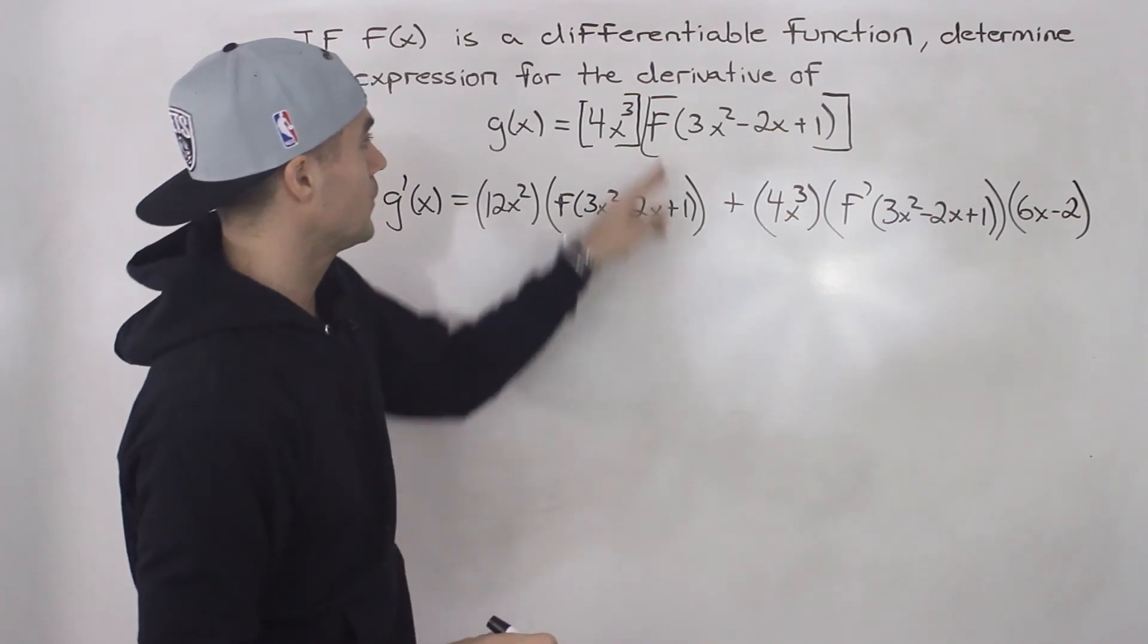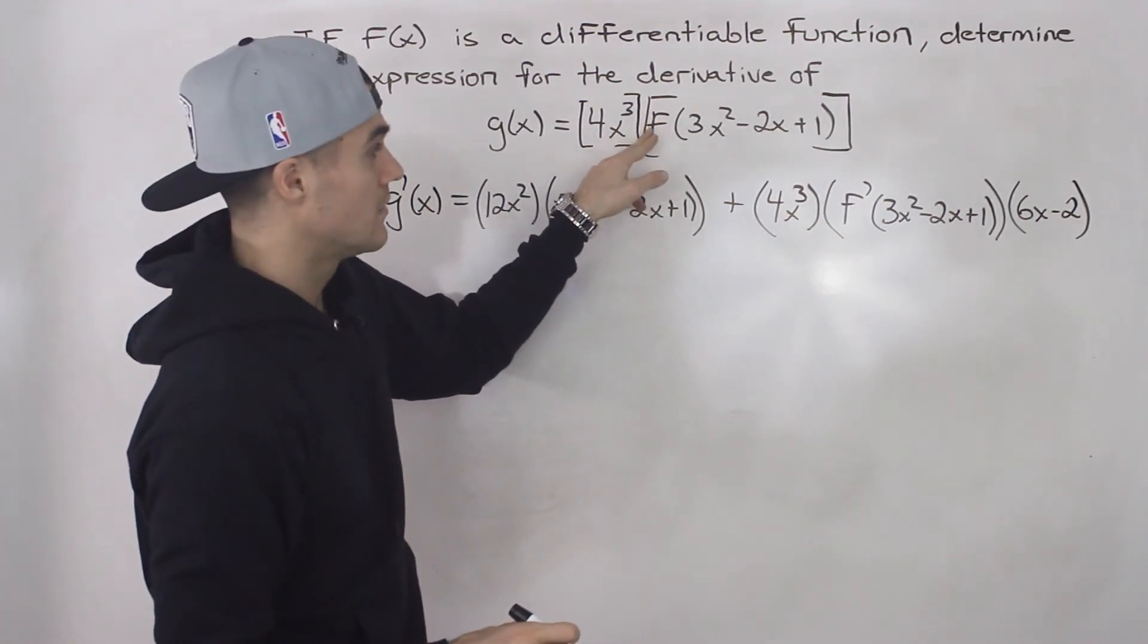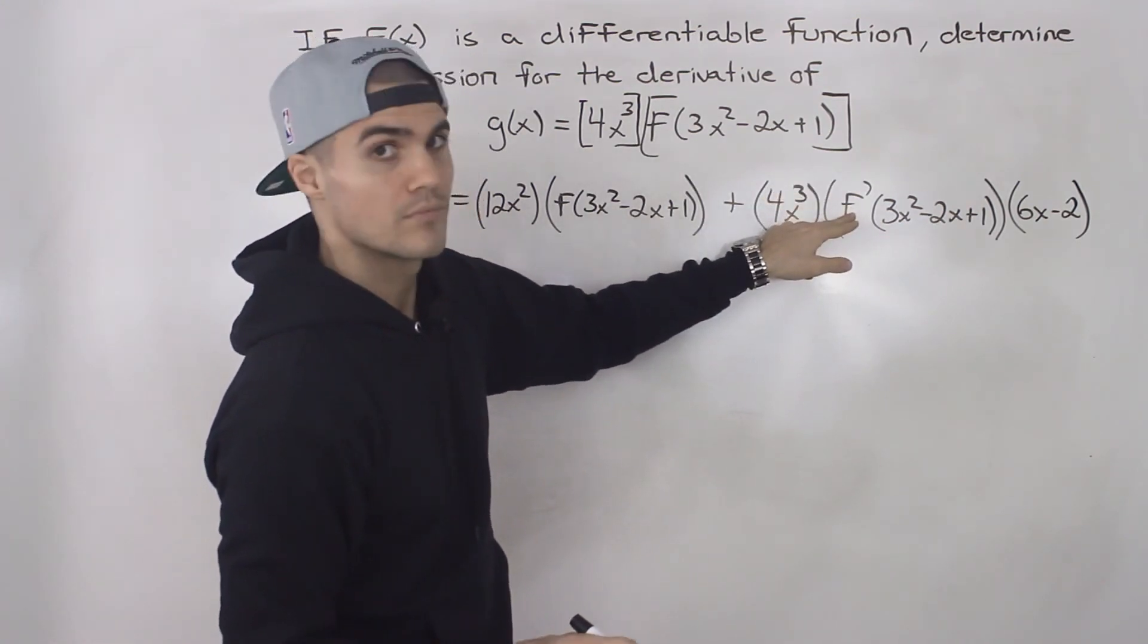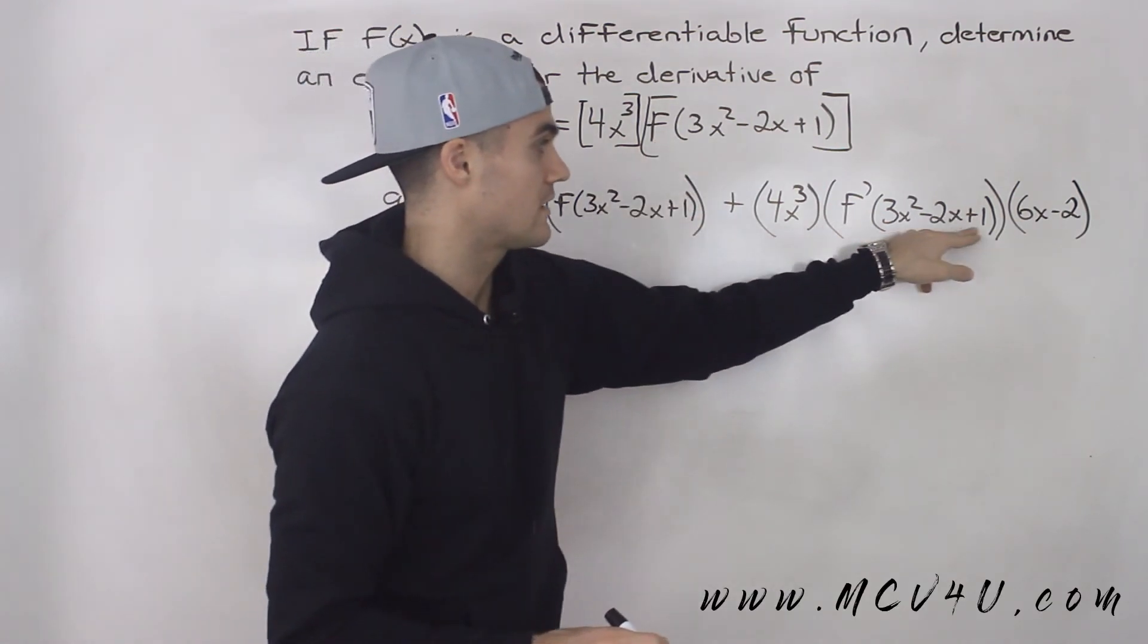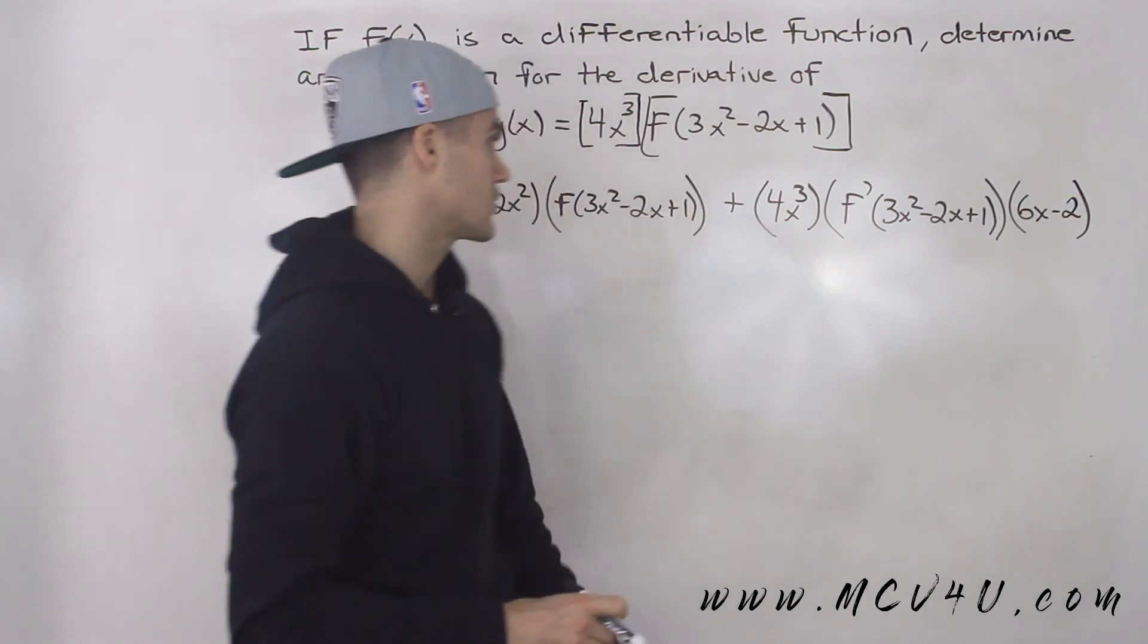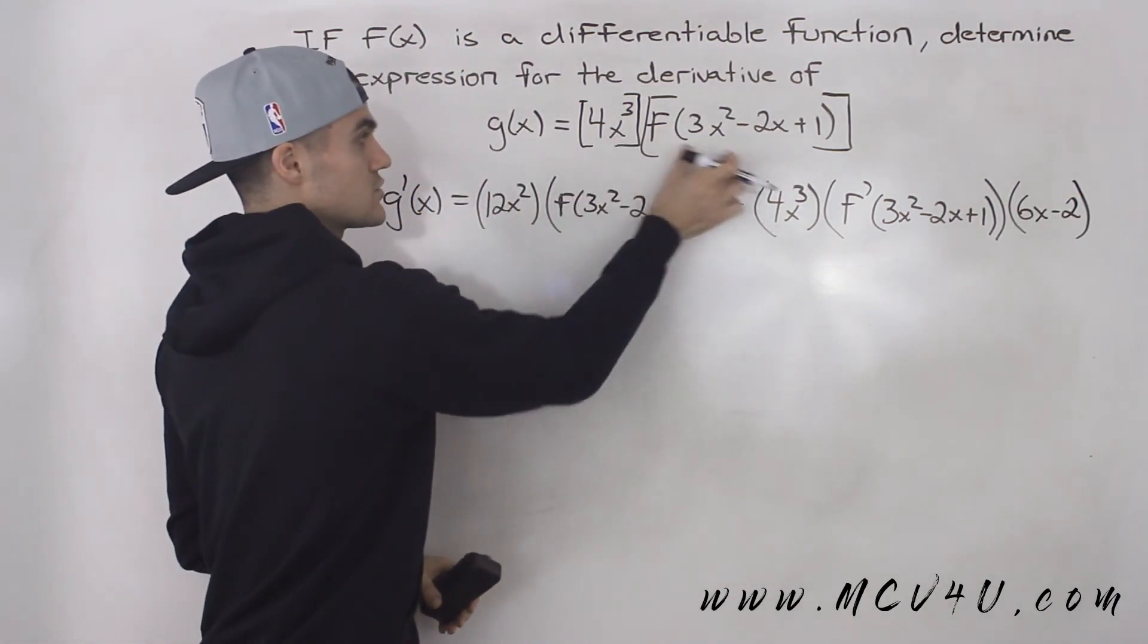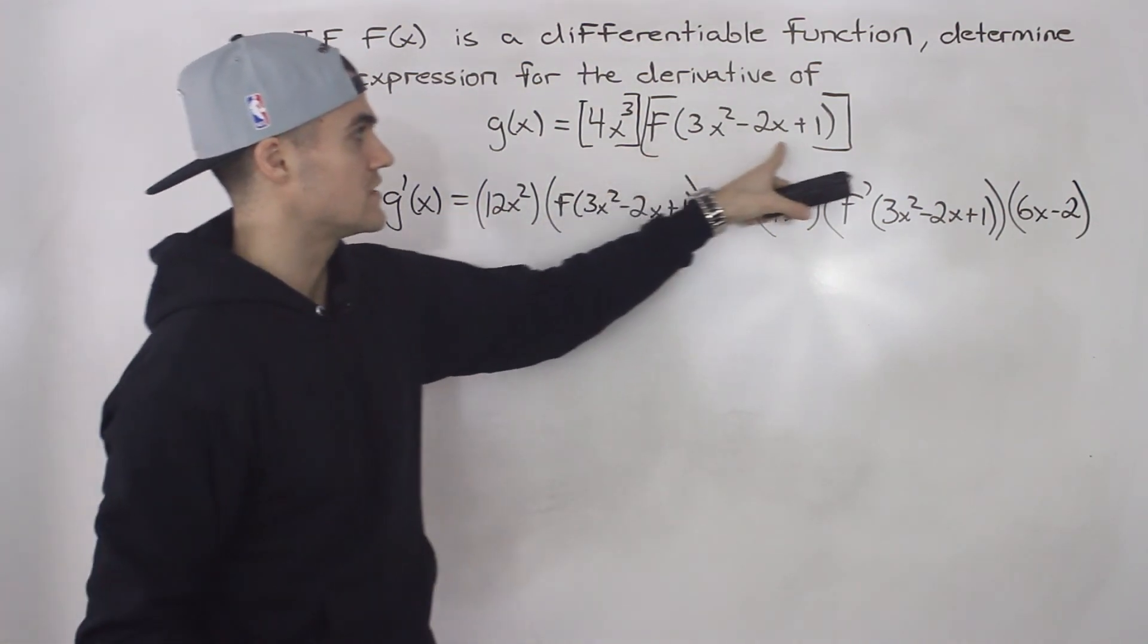Notice that we don't know what this function f is, but we do have to include it in the derivative. So we just write f' there, the derivative of that f function with that inner function the same, multiplied by the derivative of that inner function. First we apply the product rule on these two separate functions, and then when we took the derivative of this function here, we apply the chain rule.